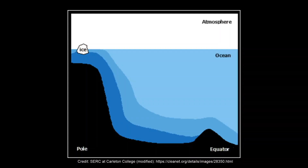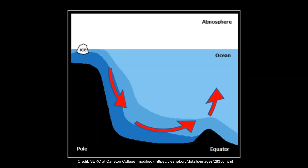Water in the oceans moves in patterns that we call currents. Winds drive ocean currents in the upper 100 metres of the ocean's surface. However, ocean currents also flow thousands of metres below the surface. These deep ocean currents are driven by differences in the water's density, which is controlled by temperature — thermo — and the salinity — haline. So this process is known as thermohaline circulation.